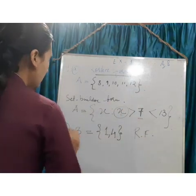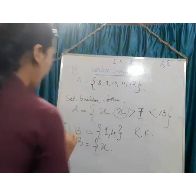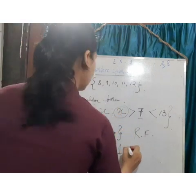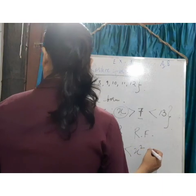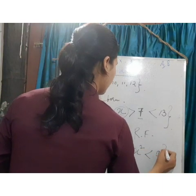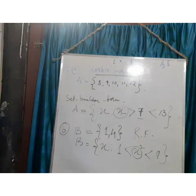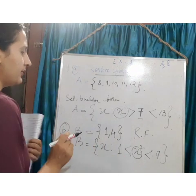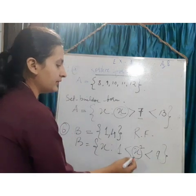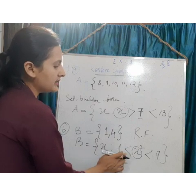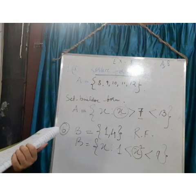For the set builder form: B = { x² | x ∈ ℕ, 1 < x < 7 }, meaning x is a natural number, x squared should be less than 7, and x is greater than 1. So x is greater than 1 and less than 7. This is how you write it. I hope that is clear.